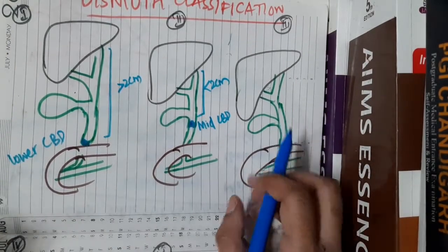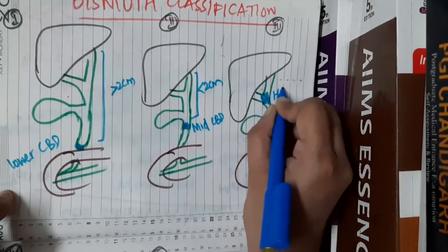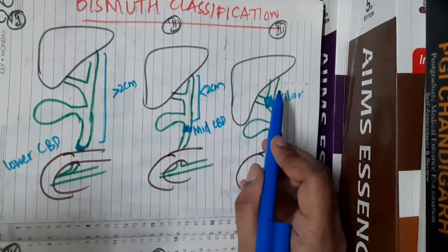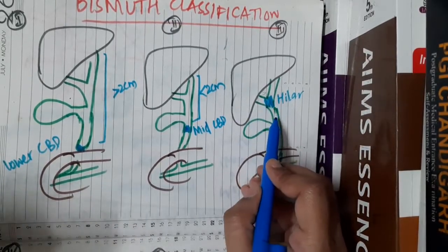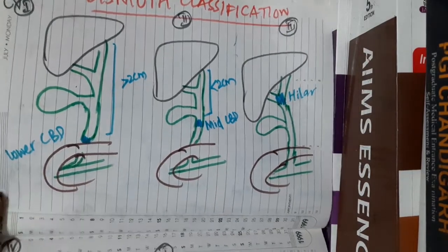In type 3, the stricture is present in hilar area. This is the hilar area, at the confluence of right hepatic duct, left hepatic duct, and common hepatic duct. There is biliary stricture in type 3.